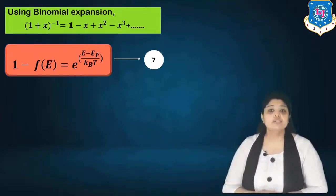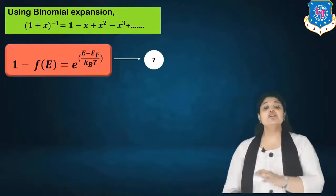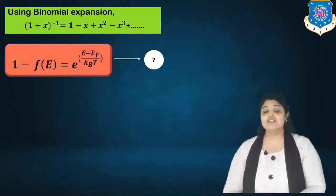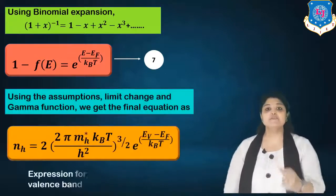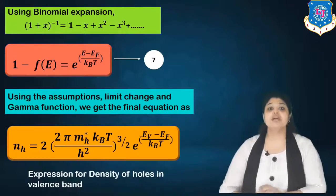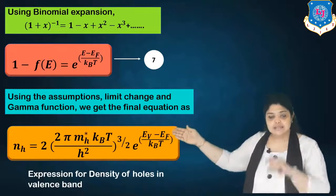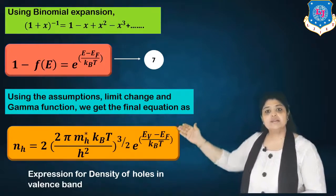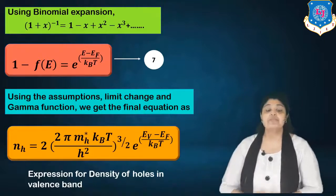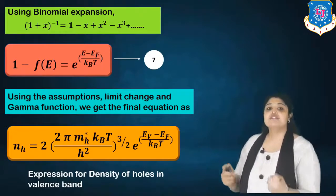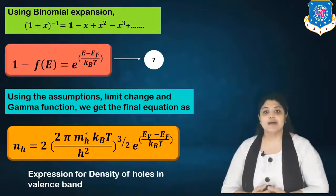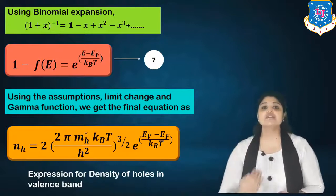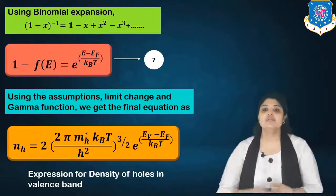With the hole DOS using (EV − E), the simplified probability function e^((E − EF)/kBT), and the substitution EV − E = x·kBT (with corresponding limit changes), and applying the gamma function — following the same procedure as the electron derivation — the expression for density of holes in the valence band is: NH = 2 × (2π MH* kBT / ℏ²)^(3/2) × e^((EV − EF)/kBT), where MH* is the effective mass of holes and EV is the maximum level of the valence band.